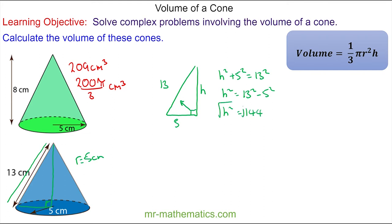We take the square root of both sides, and these cancel, so our perpendicular height is 12cm. Now we can use these values to work out the volume, which is one third of pi multiplied by the radius, 5 squared, multiplied by the perpendicular height of 12.